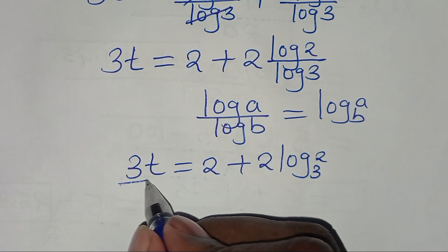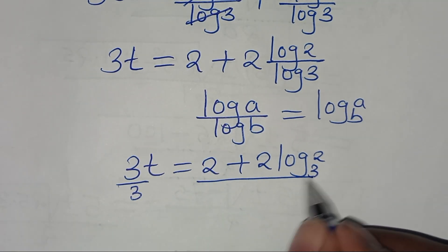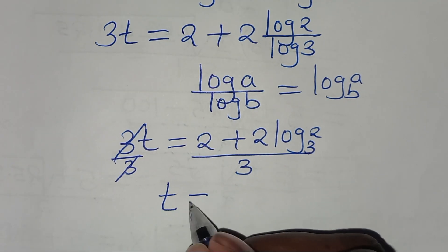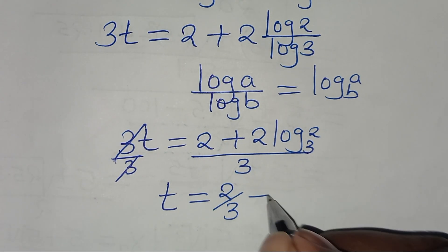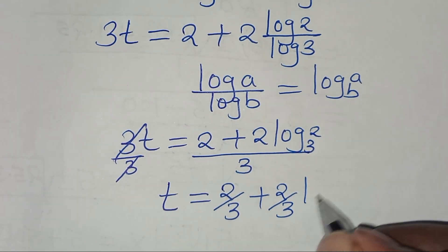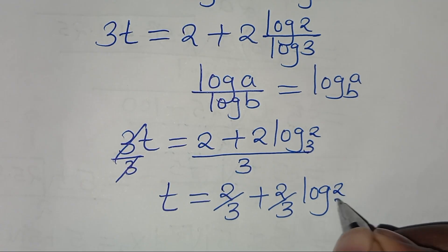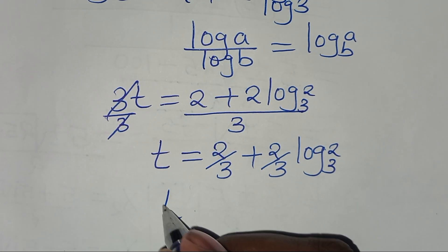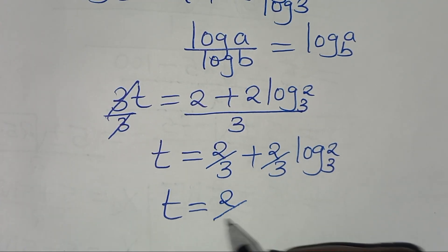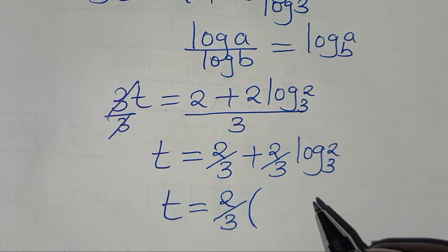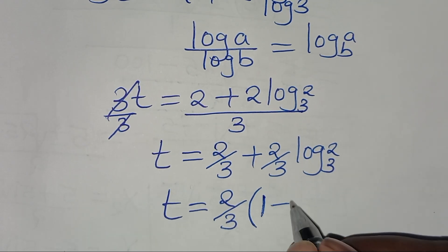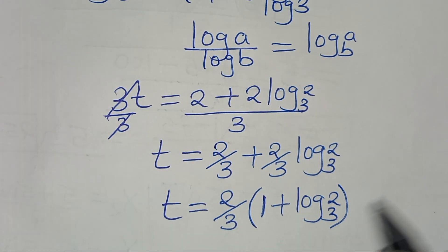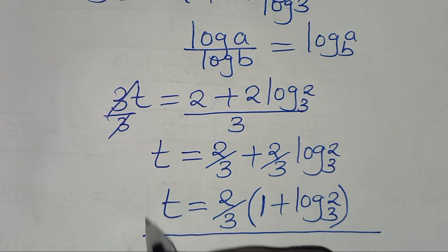Now the next step is to divide both sides by 3, so that we have the value of t equal to 2 over 3 plus 2 over 3 times log 2 to base 3. Since 2 over 3 is common here, we can factor out 2 over 3, so that we have t equal to 2 over 3 times the quantity 1 plus log 2 to base 3. This is the value of t.